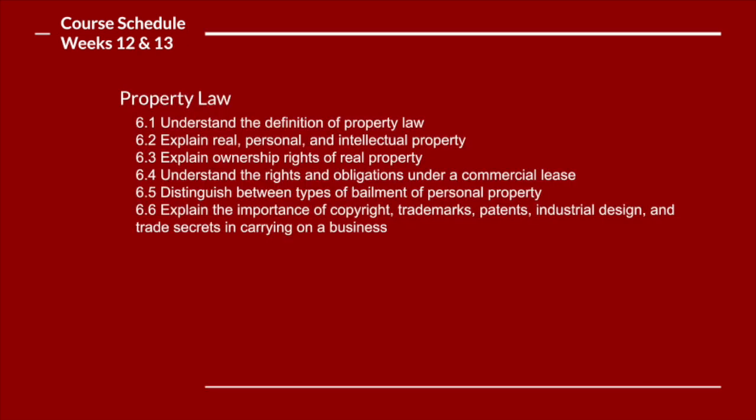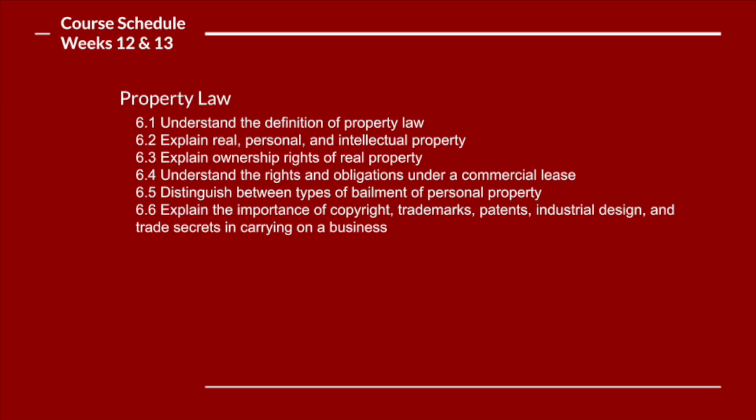Finally, we're going to take a look at property law, which can be divided into two components. The first is real property — buildings and things that you can see and touch, tangible items. Then we're going to take a look at intangible property such as copyrights and trademarks. To facilitate this learning, we're going to be using the Canadian Business Law Today textbook. This textbook has been used for several years and is out in a new edition this year. Please refer to the bookstore to pick up a copy — there may also be used copies of older editions available, which would be fine.